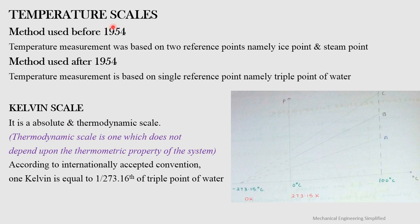Before 1954, temperature measurement was based on two reference points: the ice point and the steam point — that is, 0°C and 100°C for water. After 1954, temperature measurement is based on a single reference point: the triple point of water, which is 273.16 K or 0.01°C.